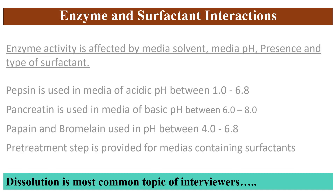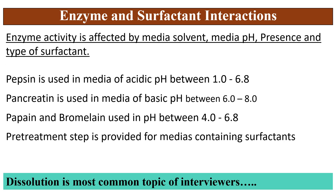Coming to the surfactant effect — enzyme activity is affected by the media solvent, media pH, and the presence and type of surfactants in the media. Pepsin is used in acidic pH media between 1 to 6.8, generally in 0.1N HCl. Pancreatin is used in basic pH media between 6 to 8. Papain and bromelain are used in the pH range between 4 to 6.8.